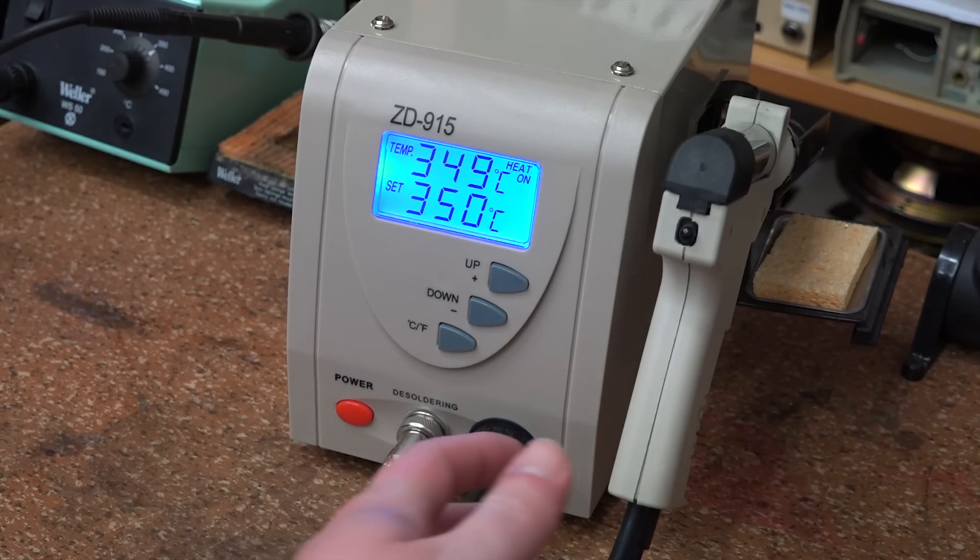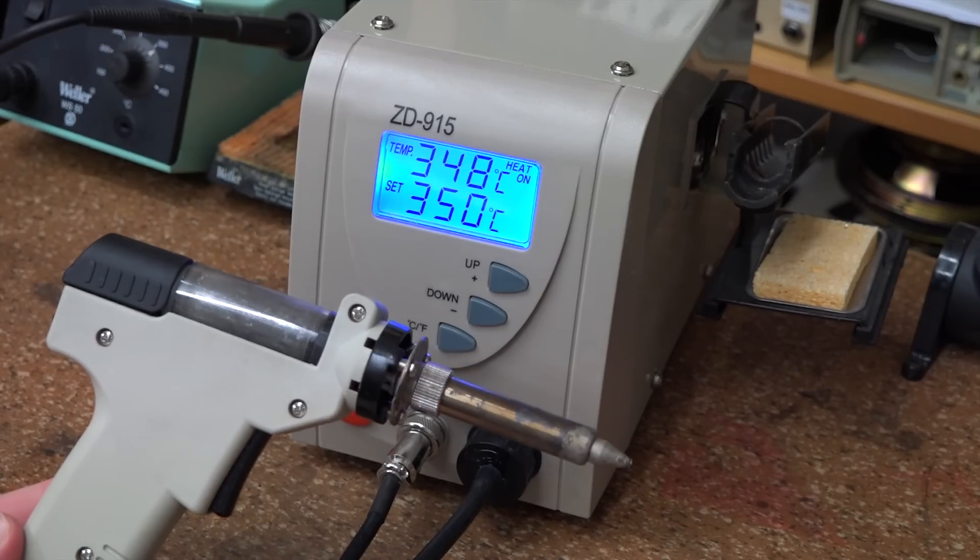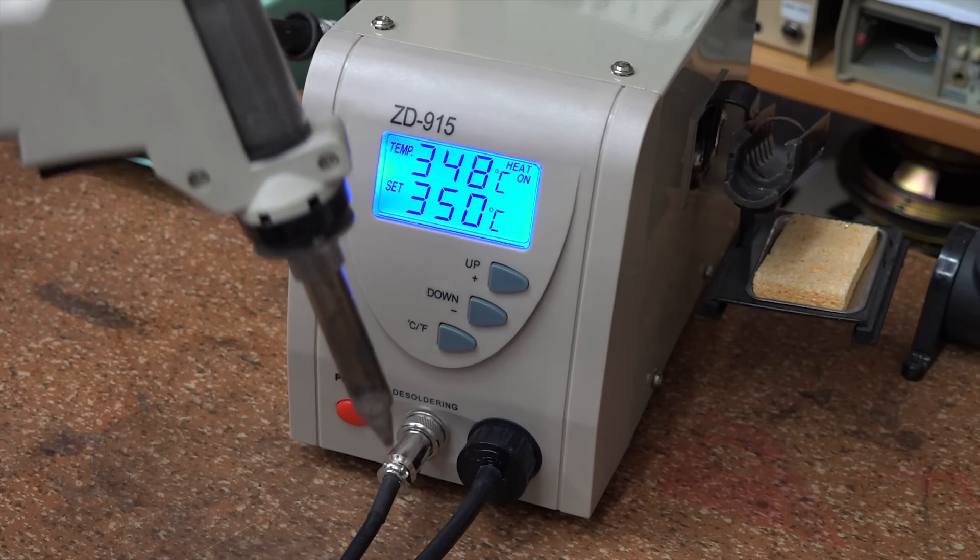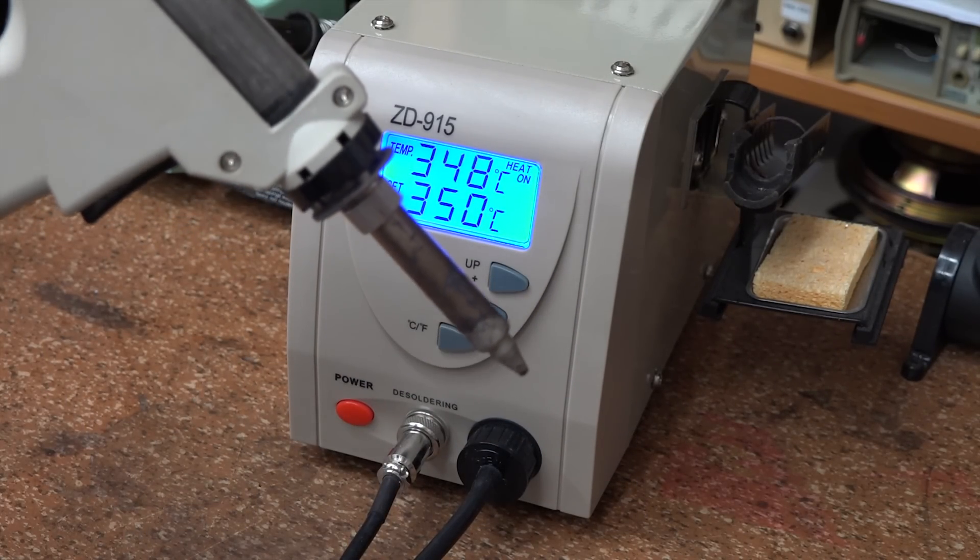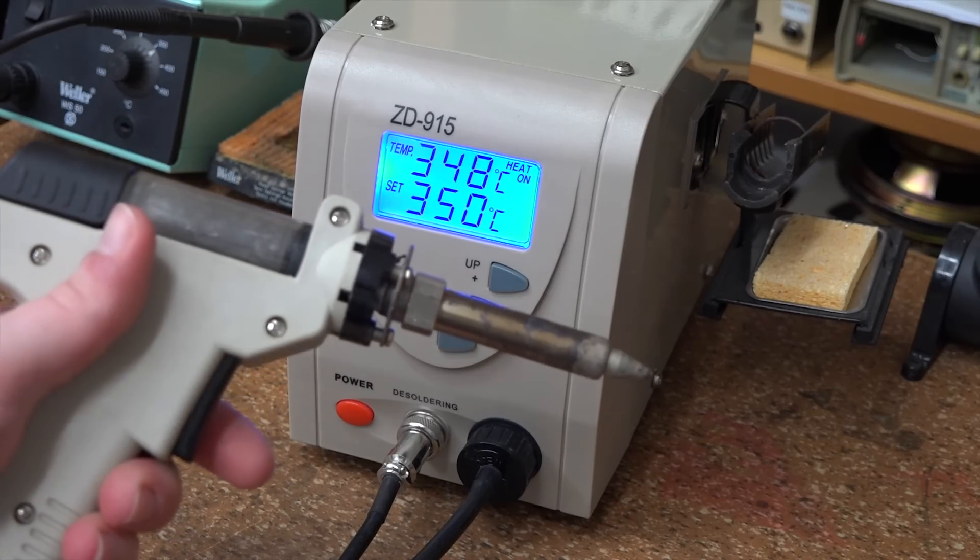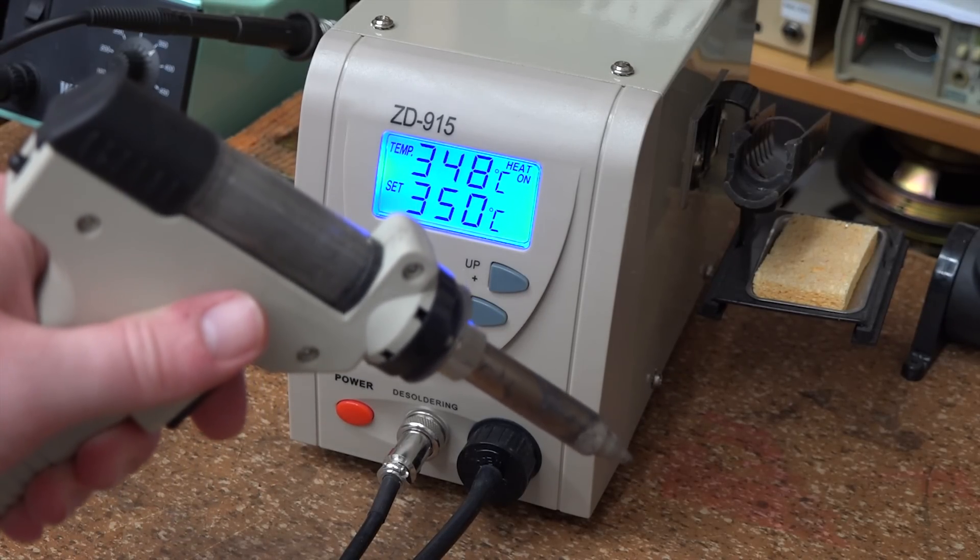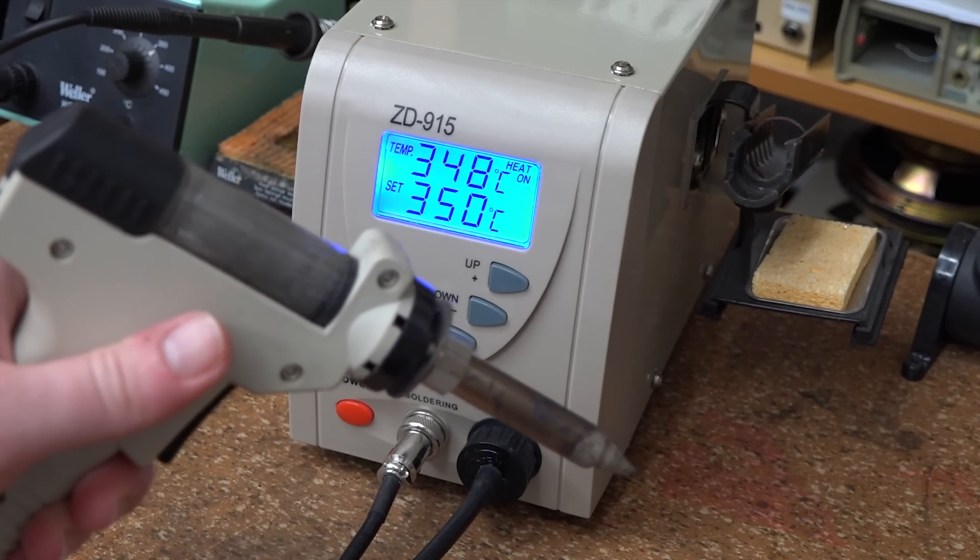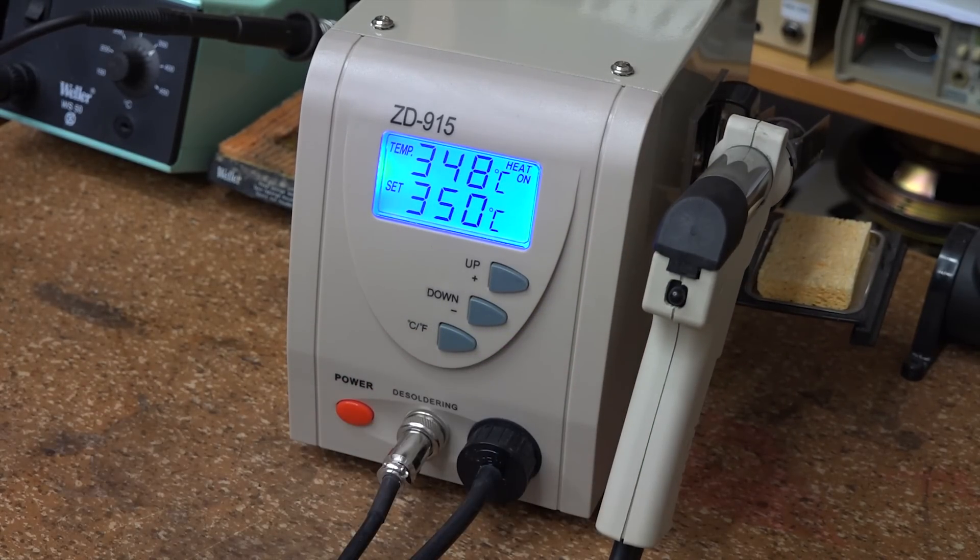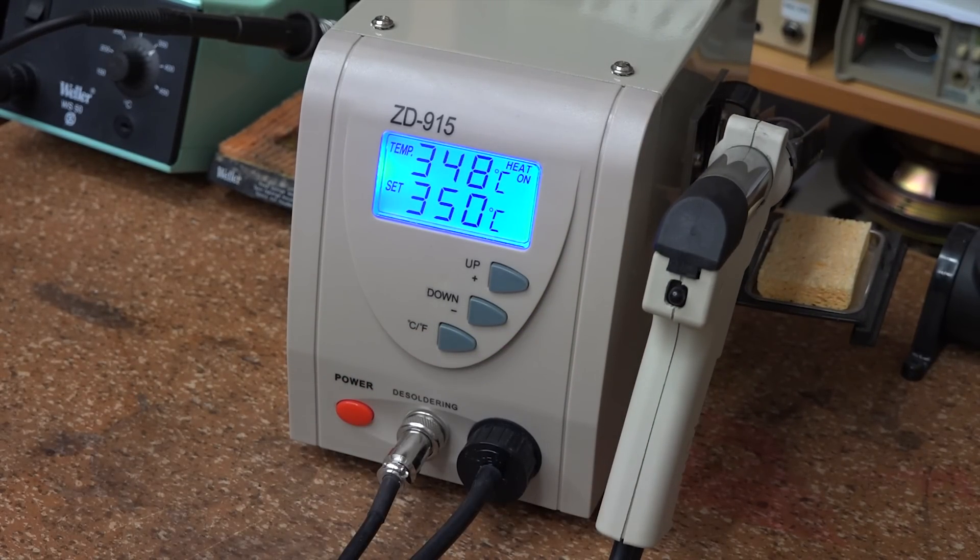So, how do you use one of these? Well, just very briefly, you take the desoldering gun, you set it on the solder joint that you want to remove, you let it heat up, and then you turn on the vacuum pump. Now, you can hear the vacuum pump is very loud, but that really doesn't matter because that, of course, is not running all the time.